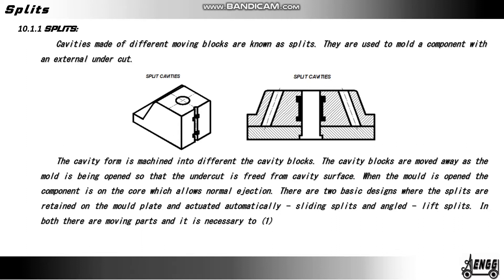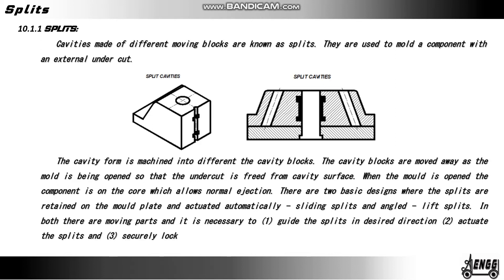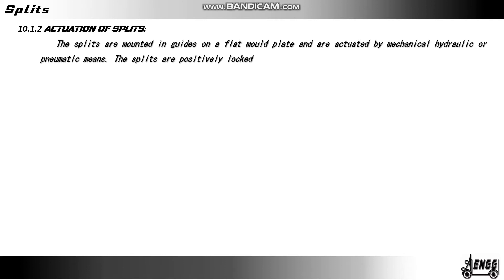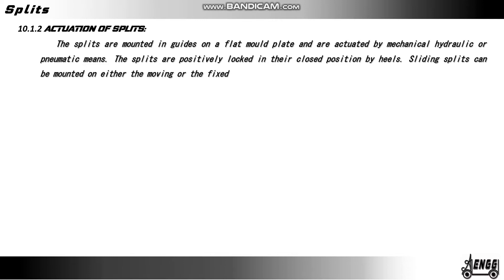In both designs there are moving parts, and it is necessary to: one, guide the splits in the desired direction; two, actuate the splits; and three, securely lock the splits in position before the material is injected into the mold. Activation of splits: the splits are mounted in guides on a flat mold plate and actuated by mechanical, hydraulic, or pneumatic means. The splits are positively locked in their closed position by a heel. Sliding splits can be mounted on either the moving or the fixed mold plate.